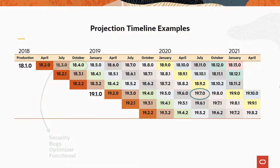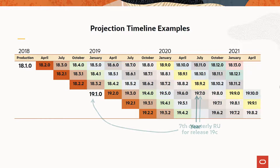Although the nomenclature for the RU patches is a five-field number, we generally represent it as a three-field number such as 19.7.0. The first of the three fields indicates the year that this annual set of new features was first available — here, it is 2019.